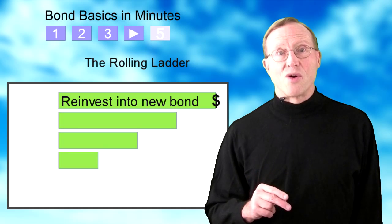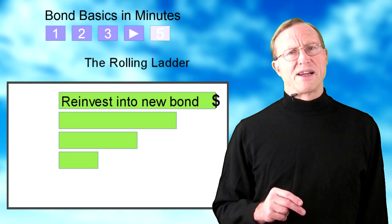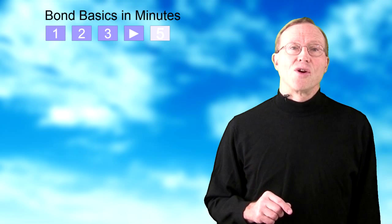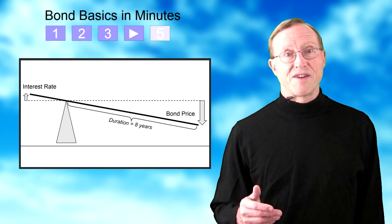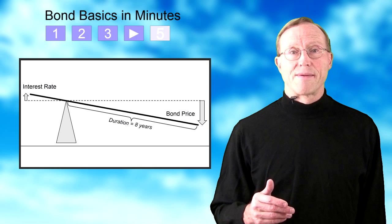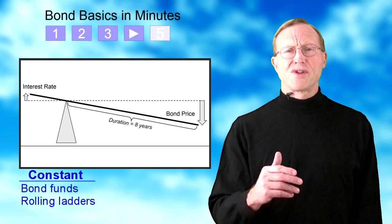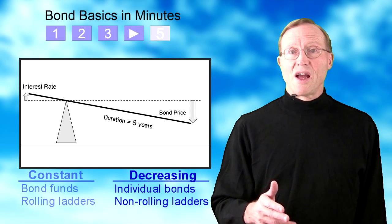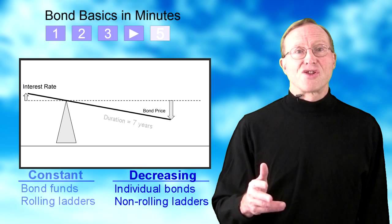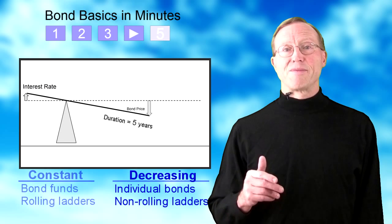The second reason to own individual bonds is a little less common, but it's worth mentioning. Last video, we introduced the concept of duration as a measure of a bond's sensitivity to changes in interest rates. A bond fund usually maintains a relatively constant duration, but both an individual bond or CD and a non-rolling ladder has a duration that decreases over time to zero.